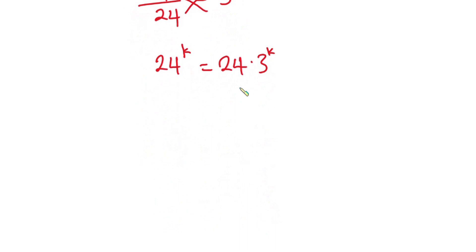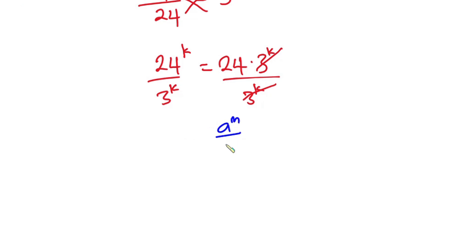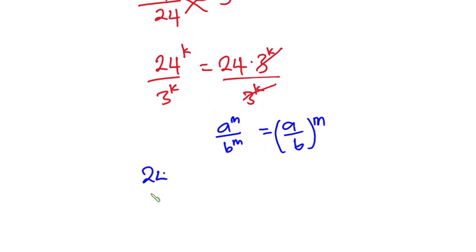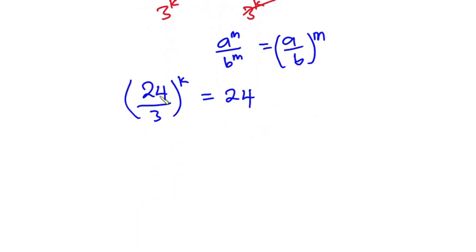From here we can divide each side by 3^k. Using the rule that a^m over b^m equals (a/b)^m, we can rewrite this as (24/3)^k equal to 24. Since 24 divided by 3 is 8, we get 8^k equal to 24.